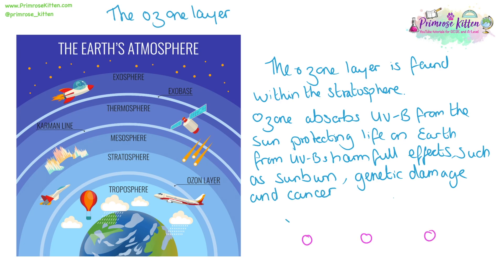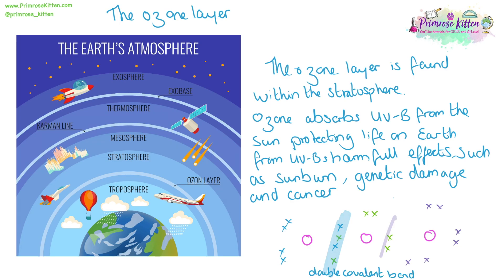The formula for ozone is O3. I'm going to draw you a dot-and-cross diagram to show you the double bonds and the dative bonds. Oxygen will have one double bond and one dative covalent bond. Note: don't use different colours in your exam.